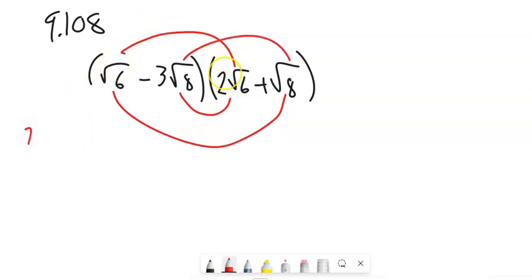Root 6 times 2 root 6. So 2 root 6 times root 6. Root 6 times root 6 is 6. So 2 times 6. This is 2 times 6, which is 12.